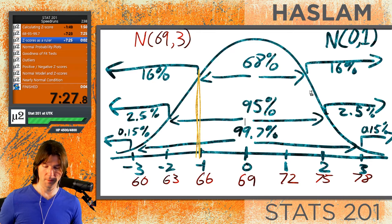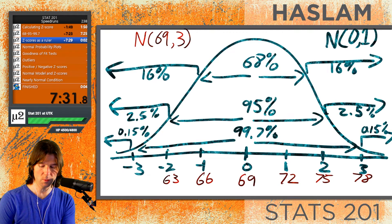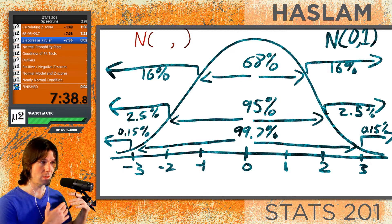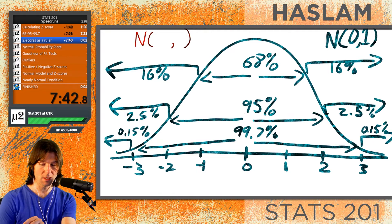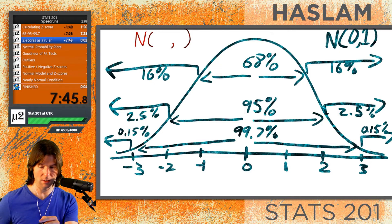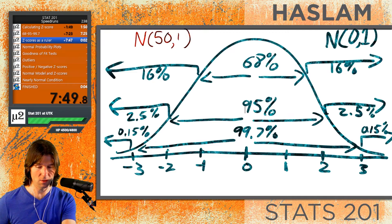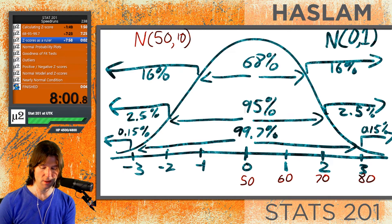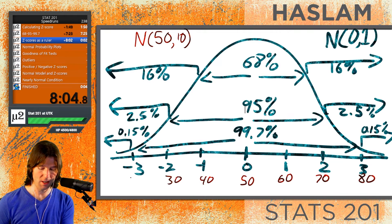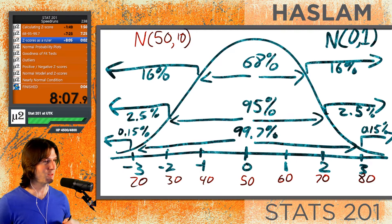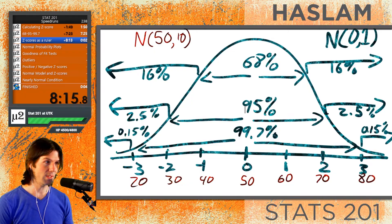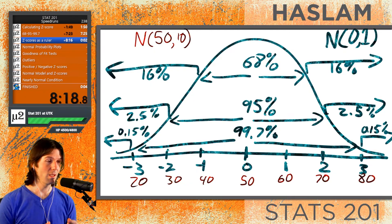Next we get to the z-score as a ruler. The standard normal curve is a ruler for all data, and we give it context. For example, a hard test with a mean of 50 and a standard deviation of 10 — if you made an 80, you'd say your test score was three standard deviations above the mean. Going 50, 60, 70, 80 confirms the observation corresponds to z=3.